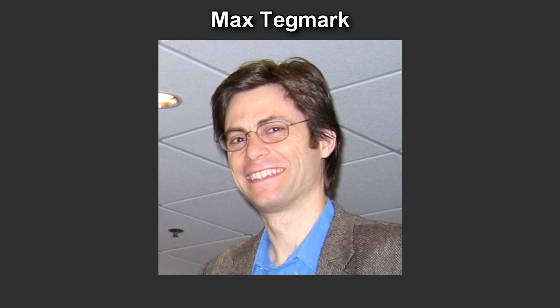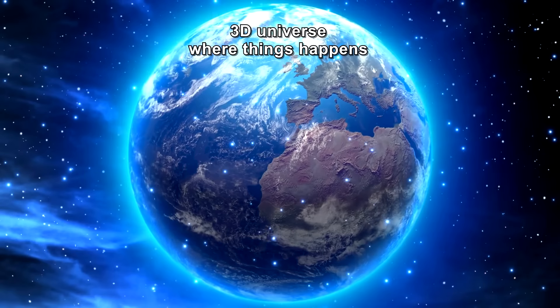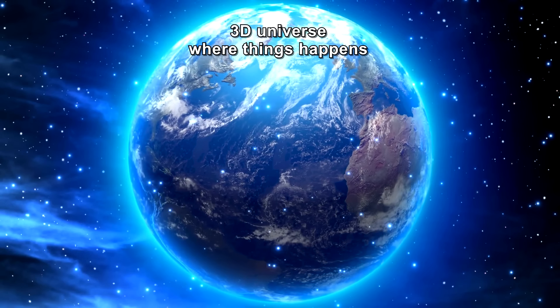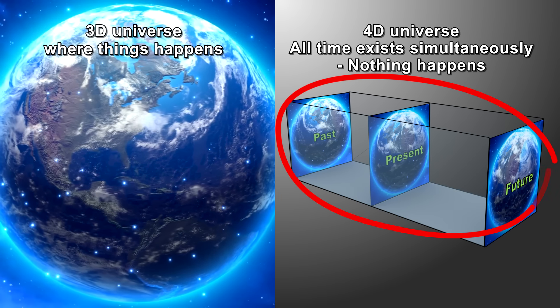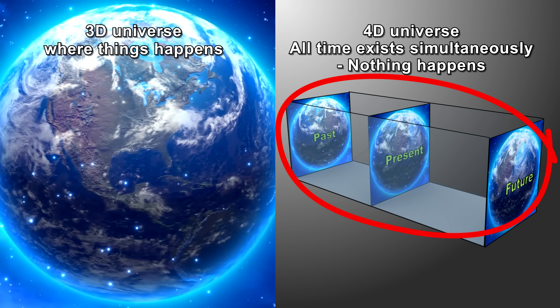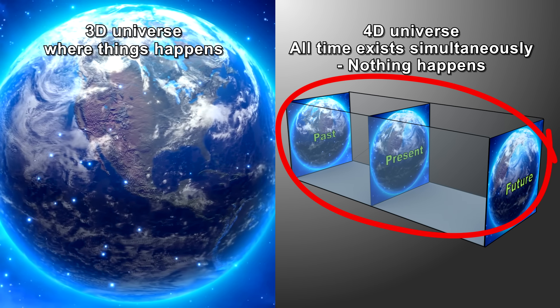MIT physicist Max Tegmark says we can view the universe as a three-dimensional space where stuff happens, or a four-dimensional block universe where nothing happens. If it is the latter, he says, then change is really an illusion because nothing is changing. It's all there.